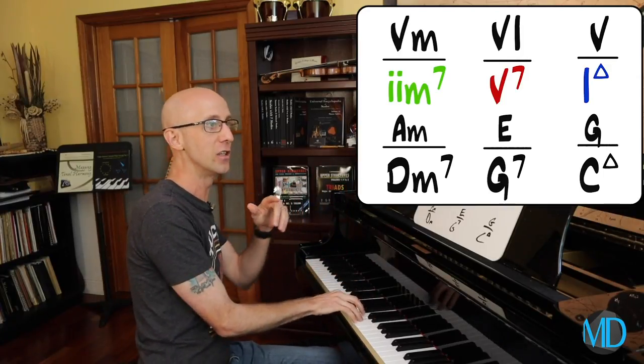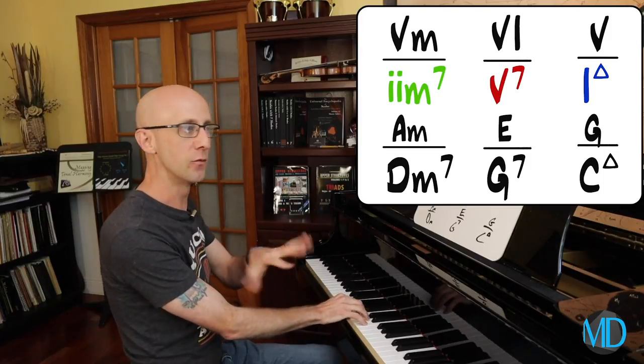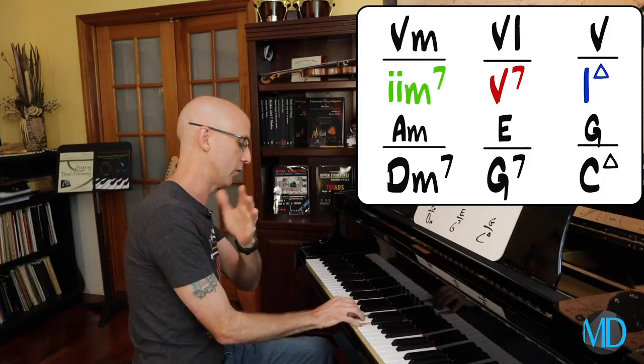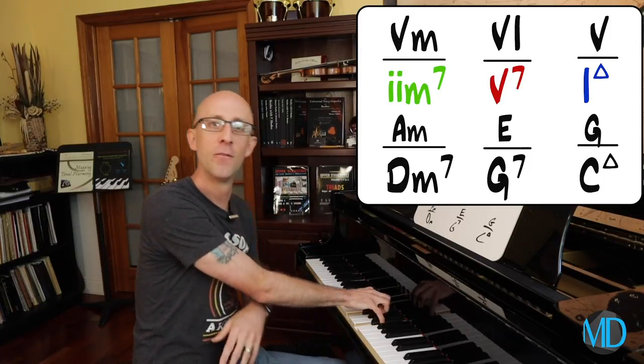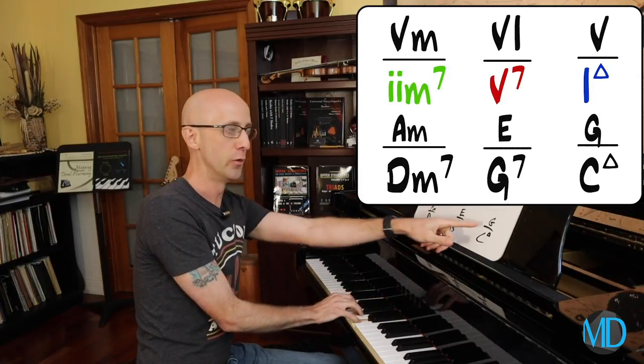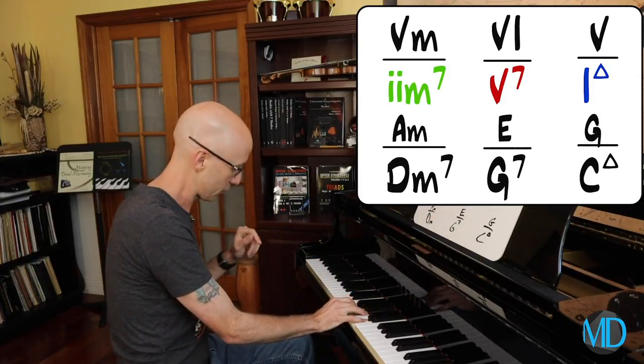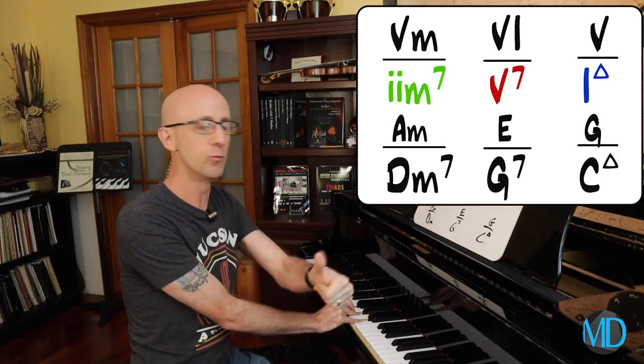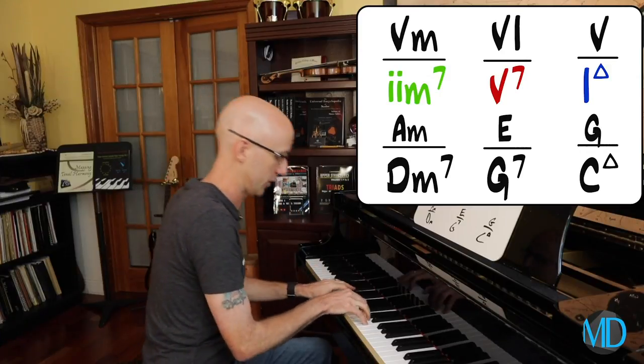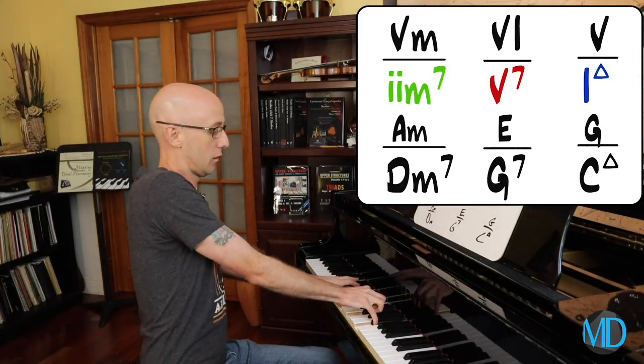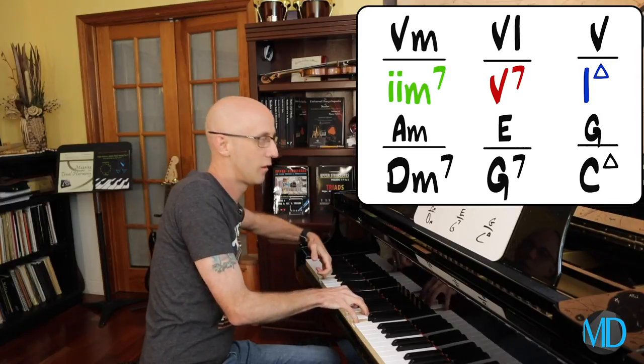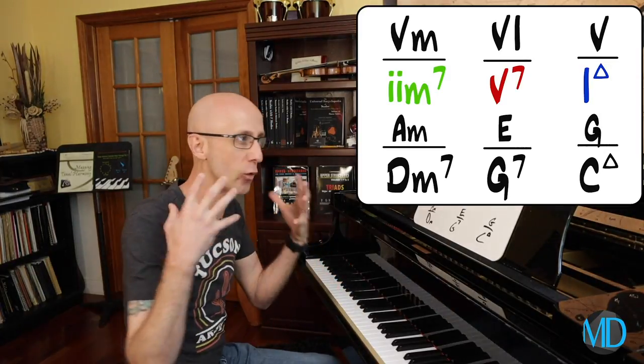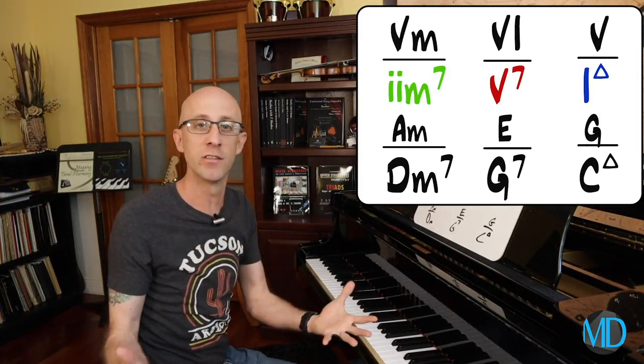Let's listen again. A minor, E, G—I'm using inversions now to make the voice leading a little smoother. I'm going to root position A minor, first inversion E, and then root position G on my right hand. We'll talk about later how to voice these chords to create the desired effect of smooth voice leading or something else.